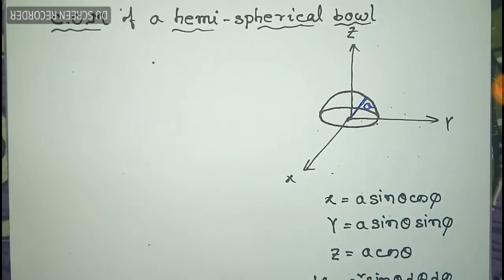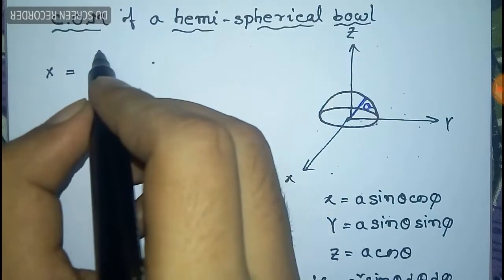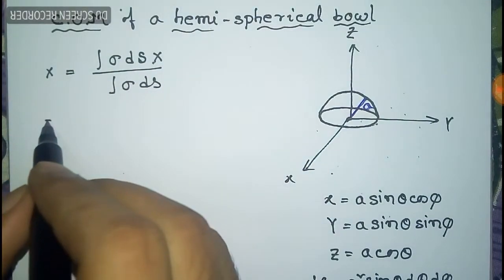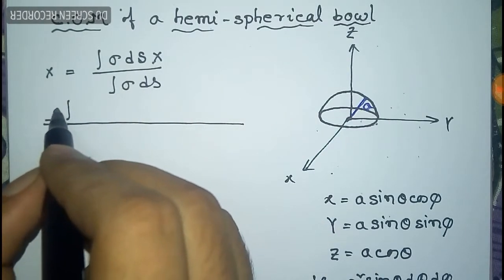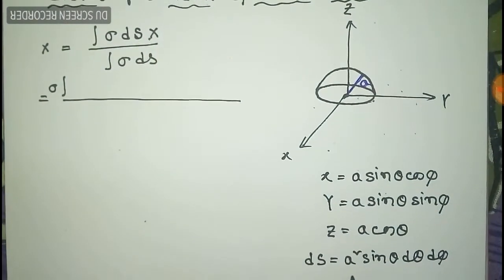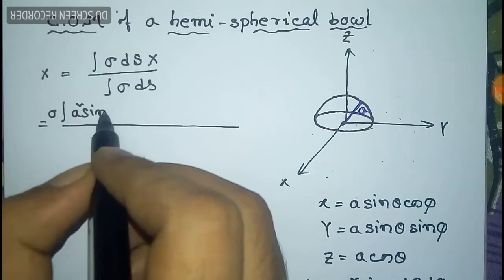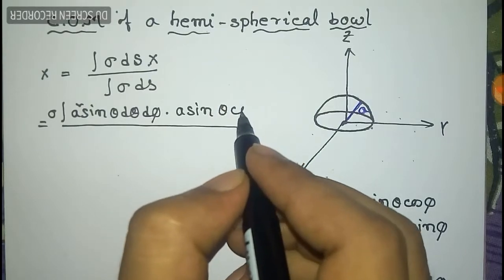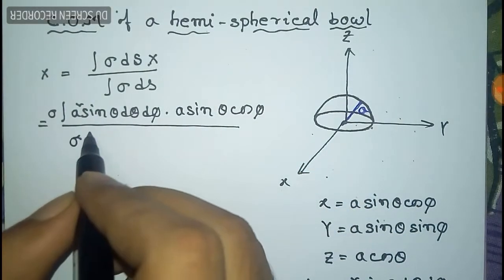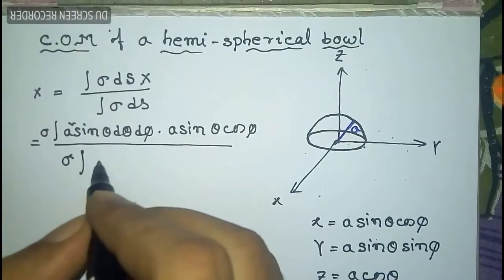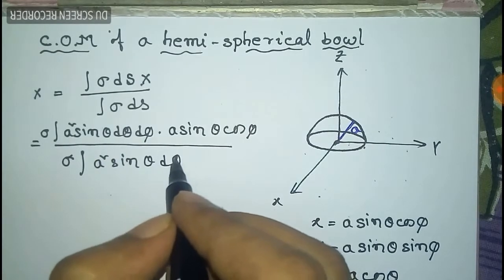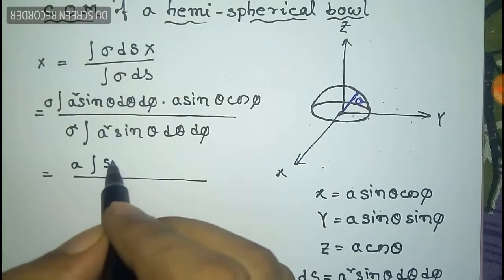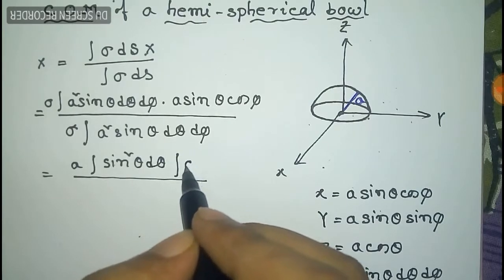Now the center of mass with respect to the x-axis is x̄ equal to the integration of σ dS times x divided by the integration of σ dS. Since σ is a constant it comes out of the integral, giving a² sin θ dθ dφ times a sin θ cos φ in the numerator.